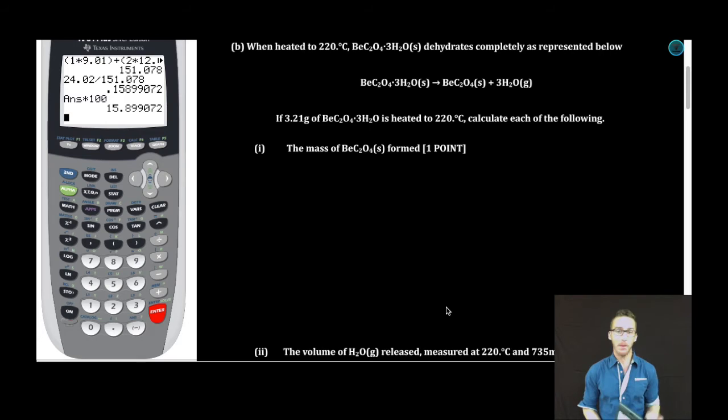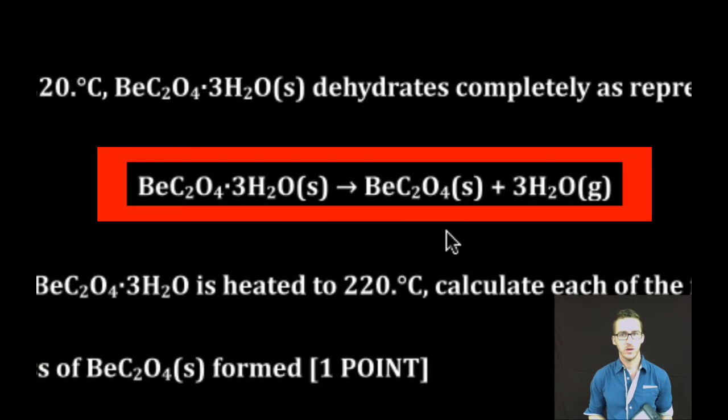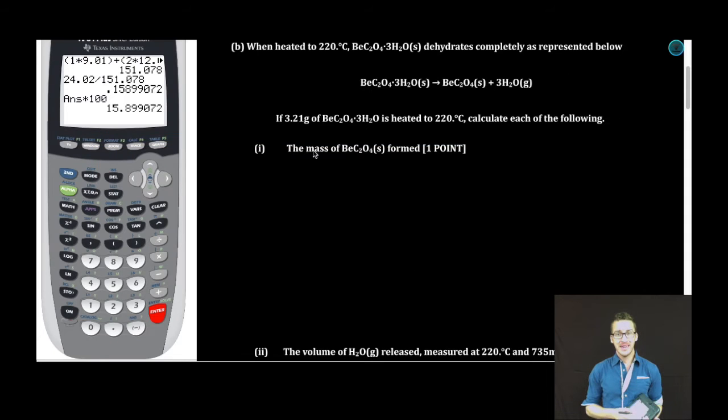Let's keep this party rolling. Part B. When heated to 220 degrees Celsius, beryllium oxalate trihydrate dehydrates completely as represented below. We are driving off the water. If 3.21 grams of beryllium oxalate trihydrate is heated to 220 degrees Celsius, calculate each of the following. B part I. The mass of beryllium oxalate formed. Now there's a couple ways you can do this. I'm going to show you the way that I think is easiest. Recognize that we're dehydrating this hydrated compound. We're driving off the water.